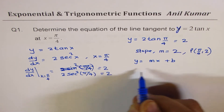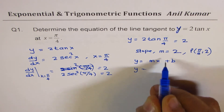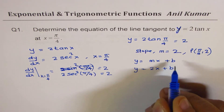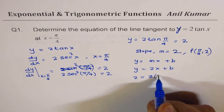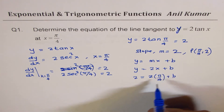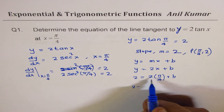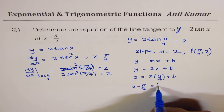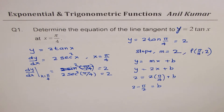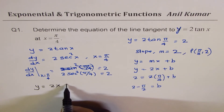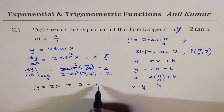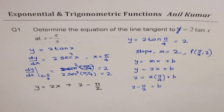We use the equation y equals mx plus b. With slope 2, we write y equals 2x plus b. To find b, we substitute the point (pi/4, 2): 2 equals 2 times (pi by 4) plus b, so b equals 2 minus pi by 2. Therefore the equation of the tangent line is y equals 2x plus (2 minus pi by 2).